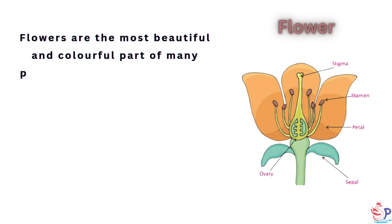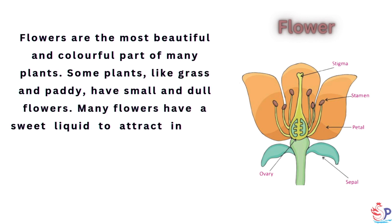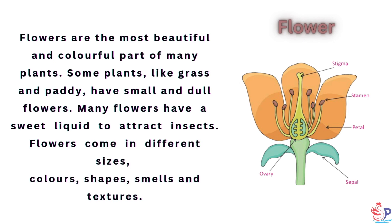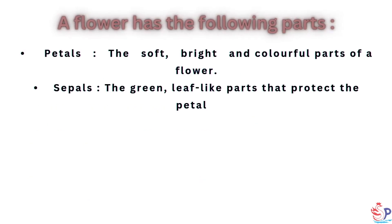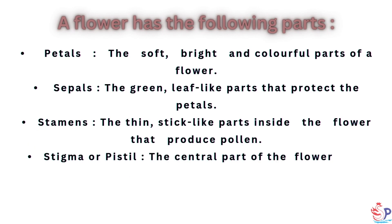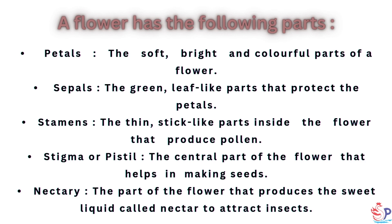Flowers are the most beautiful and colorful part of many plants. Some plants, like grass, have small and dull flowers. Many flowers have a sweet liquid to attract insects. Flowers come in different sizes, colors, shapes, smells and textures. A flower has the following parts: petals — the soft, bright and colorful parts; sepals — the green, leaf-like parts that protect the petals; stamens — thin, stick-like parts that produce pollen; pistil — the central part that helps in making seeds; and nectary — the part that produces the sweet liquid called nectar to attract insects.